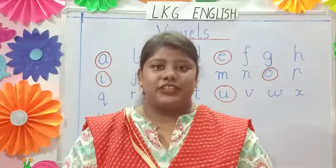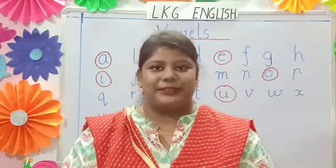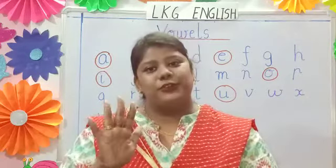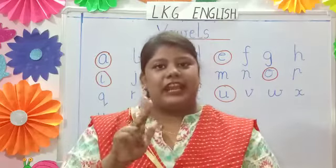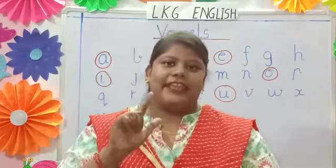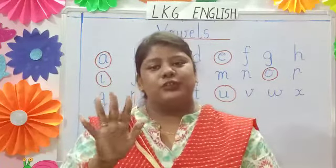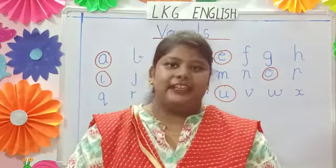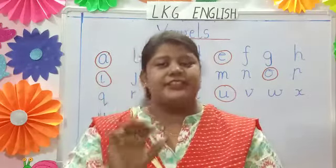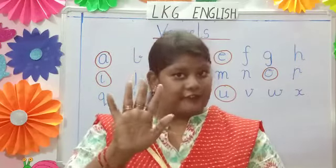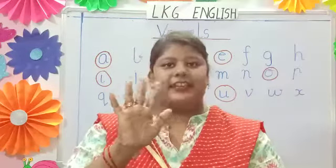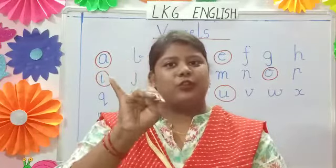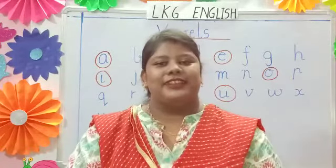Now children, sing one song with me. A, E, I, O, U. A, E, I, O, U. A, E, I, O, U. How many vowels are there? There are 5 vowels. A, E, I, O, U.